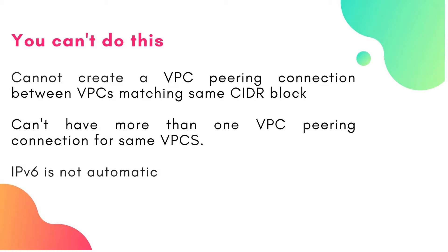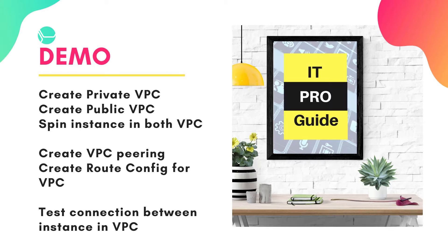We're going to start with the very basic steps: how to create a VPC in private and public, then spin instances in both VPCs, then create VPC peering, then create a route configuration for VPC, and finally test connections between the instances in both VPCs.